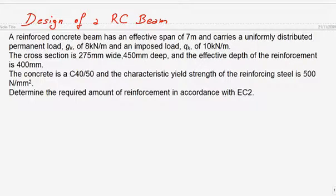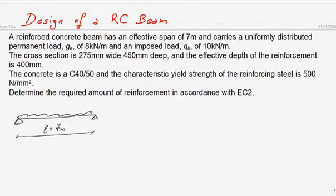A reinforced concrete beam has an effective span of 7 meters and carries a uniformly distributed load. The load consists of a permanent load gk of 8 kN/m and an imposed load qk of 10 kN/m.